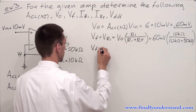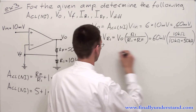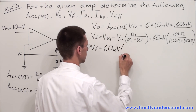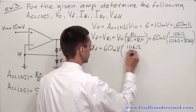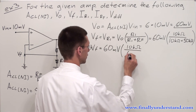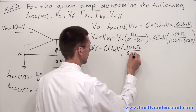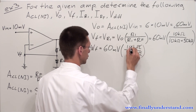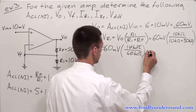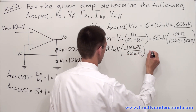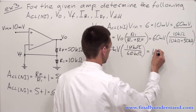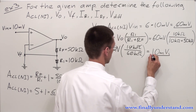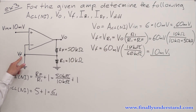VF is going to be equal to 60 millivolts times 10 kilo ohms over 60 kilo ohms. Kilo ohms and kilo ohms will cancel out; we reduce the fraction by 10, and I end up with 10 millivolts. My feedback voltage is equal to 10 millivolts.